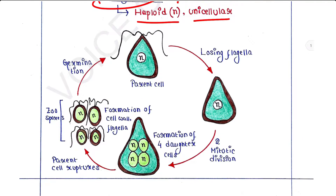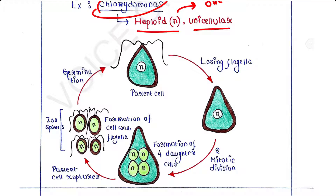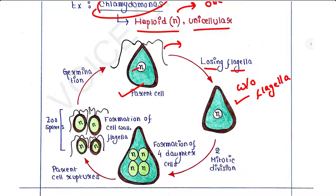Each parent cell — which is haploid and unicellular — first loses its flagella. So the first step is that the parent cell loses its flagella. Later, it undergoes two subsequent mitotic divisions.